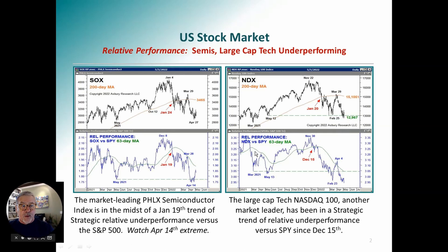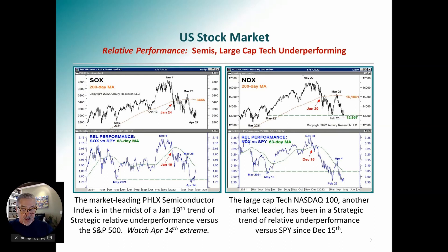Let's look at relative performance in the NDX. It started underperforming SPY on a 63-day strategic basis on December 15th. It made a fresh relative underperformance low, came up, briefly broke the 63-day moving average for a day or two, and now we're making fresh relative underperformance extremes. So there's a lot of weakness here.